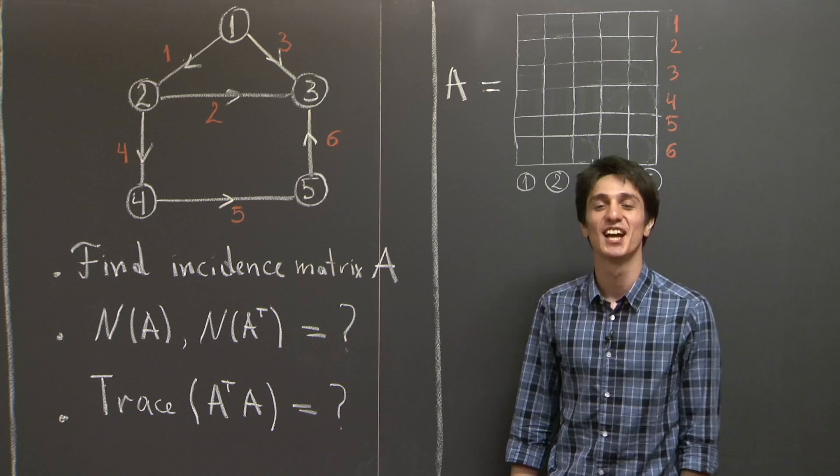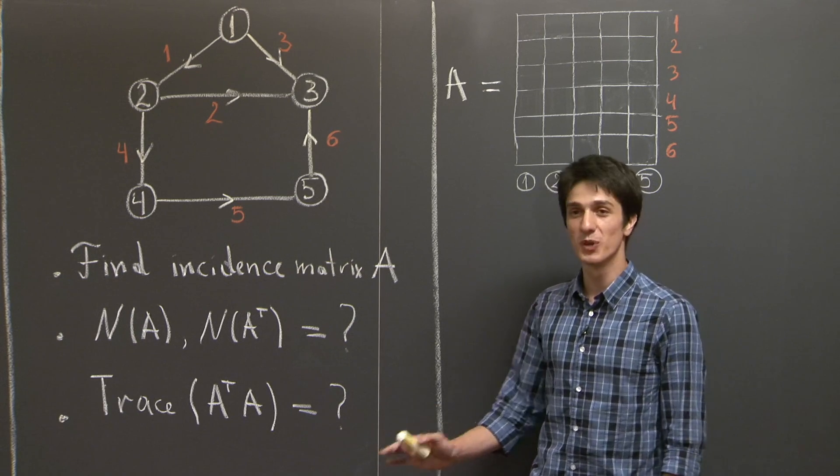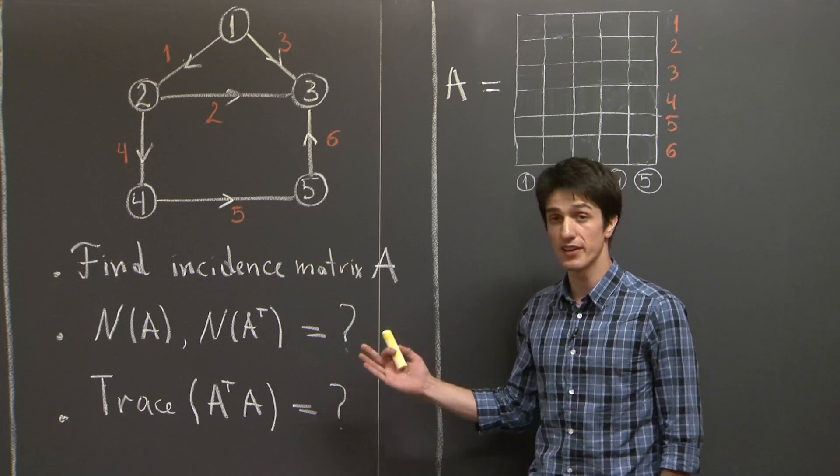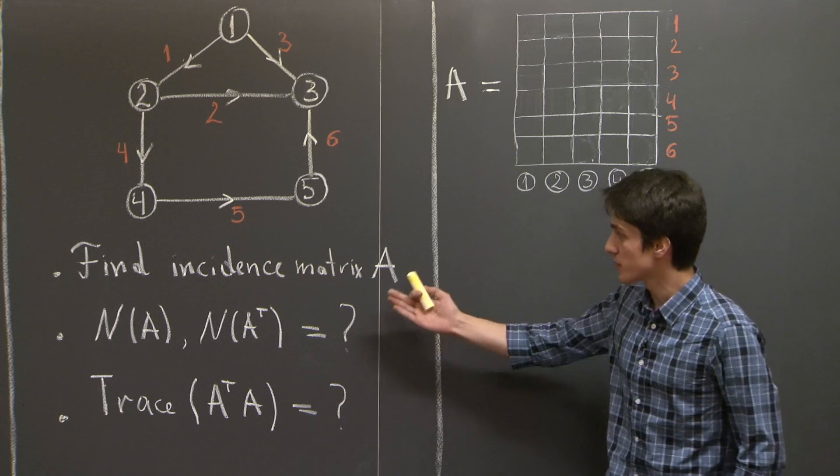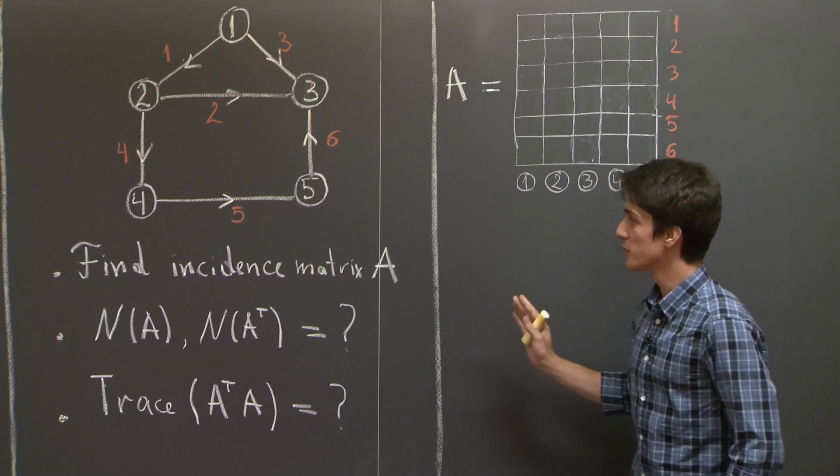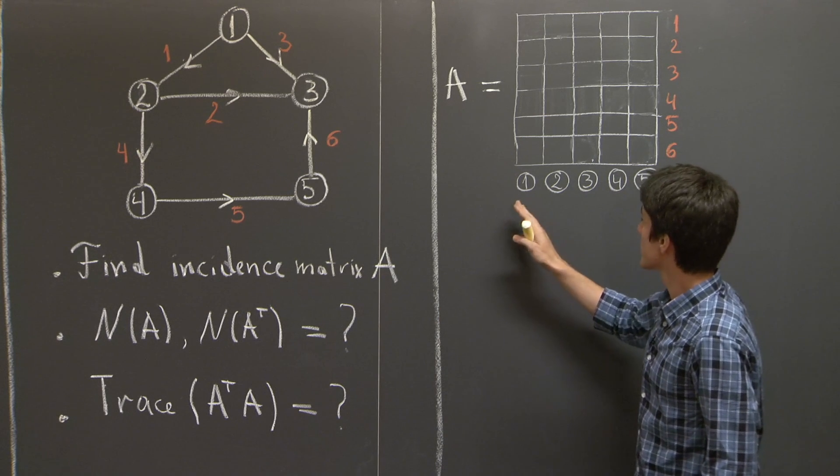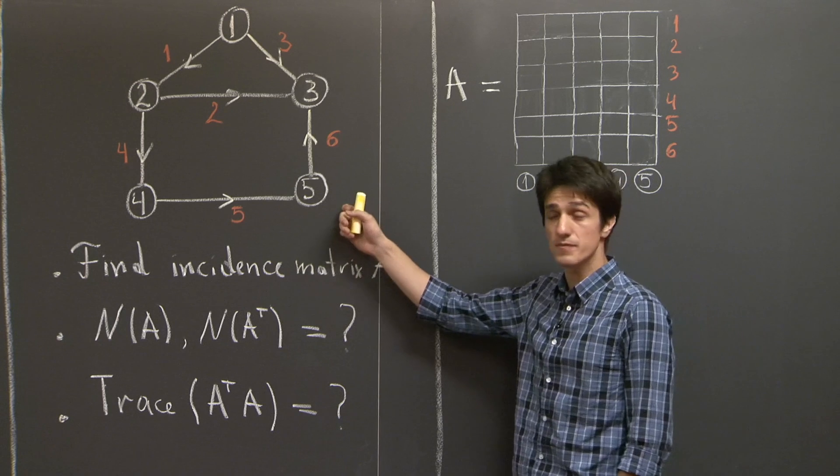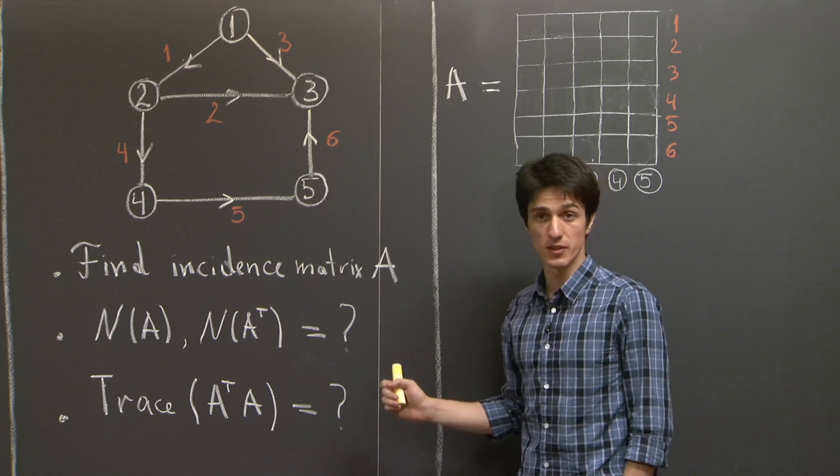Hello again. OK, so let's first recall what an incidence matrix is. An incidence matrix is supposed to encode how the nodes connect to the edges. In particular, it has as many rows as there are edges, and as many columns as there are nodes.